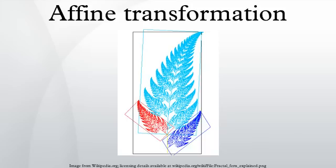Alternative definition: given affine spaces X and Y over the same field, a function f is an affine map if and only if for every family of weighted points in X such that the weights sum to one, the map preserves the weighted combination. In other words, f preserves barycenters.